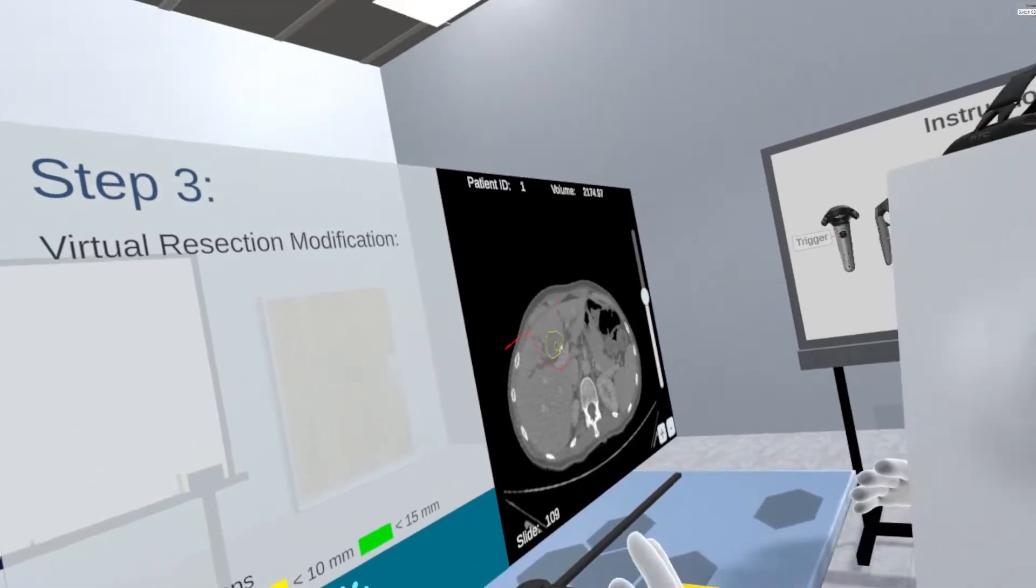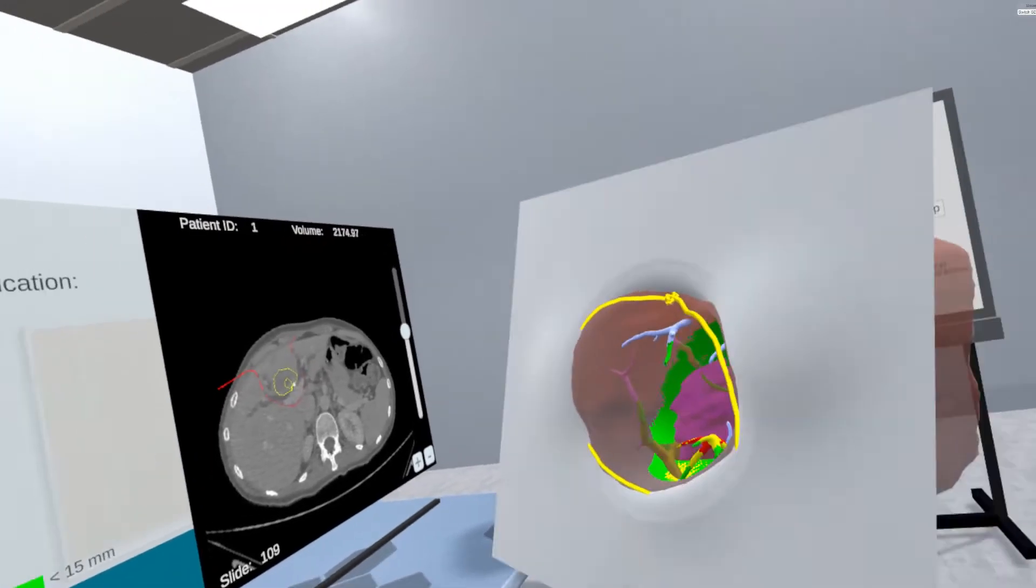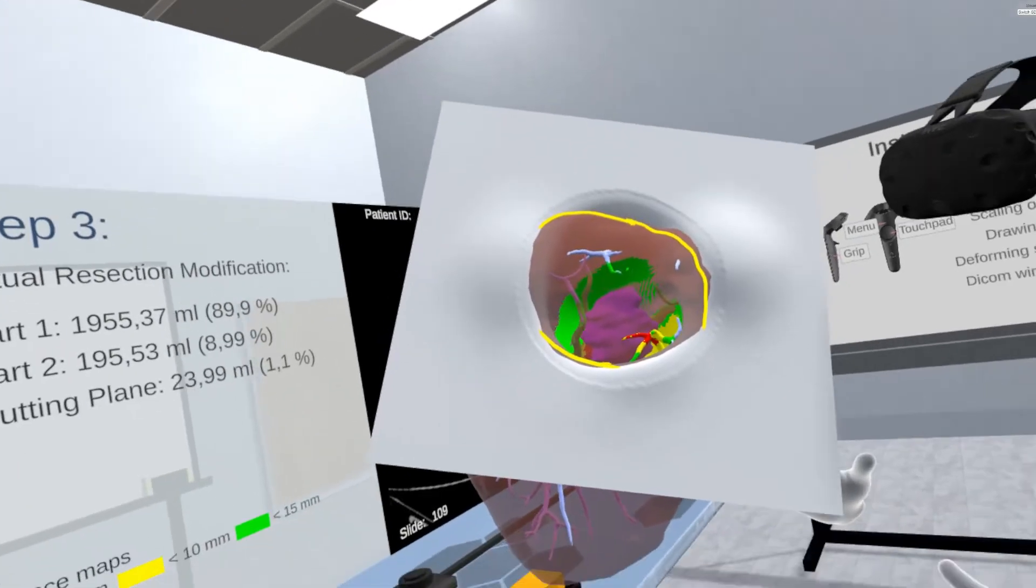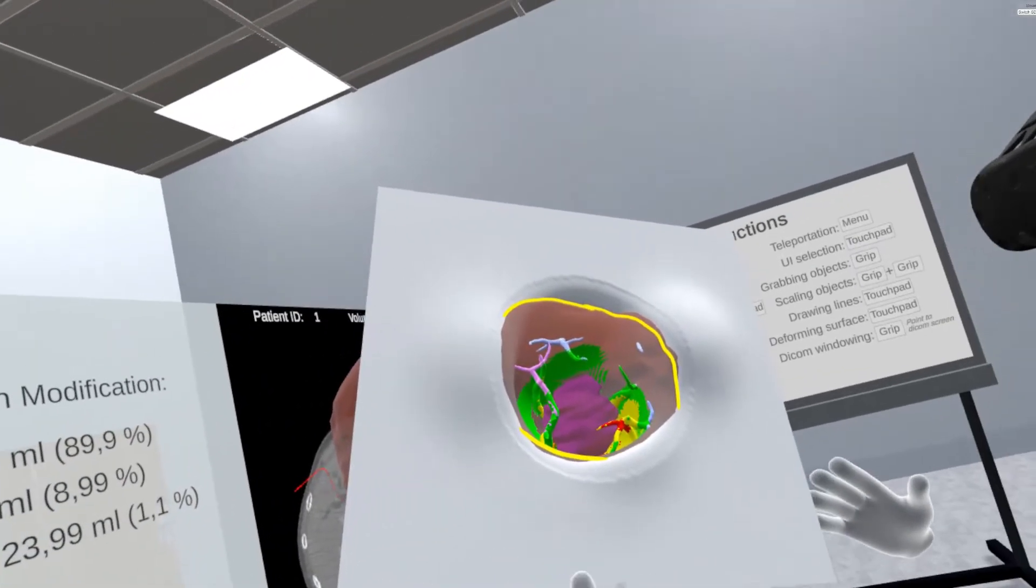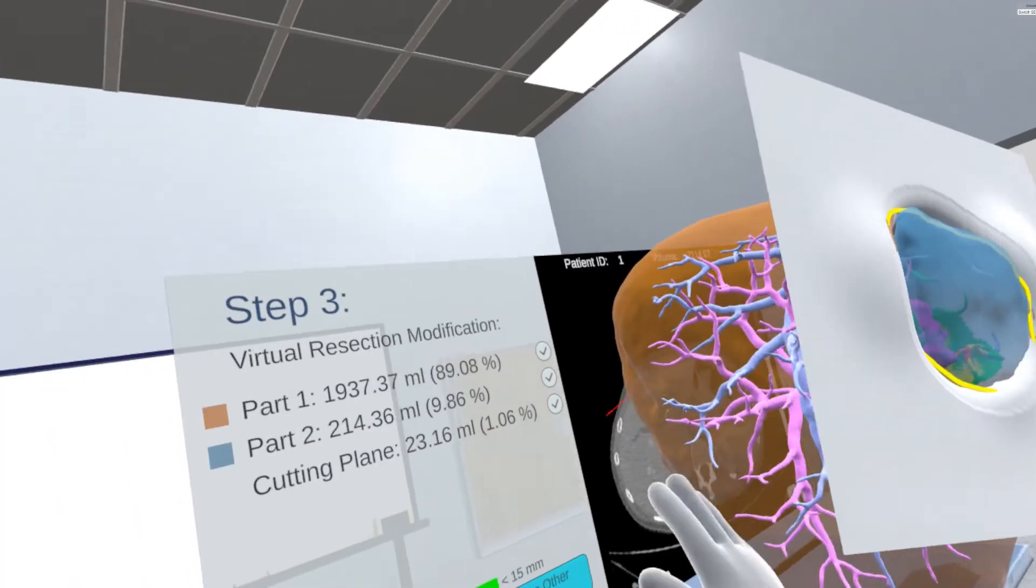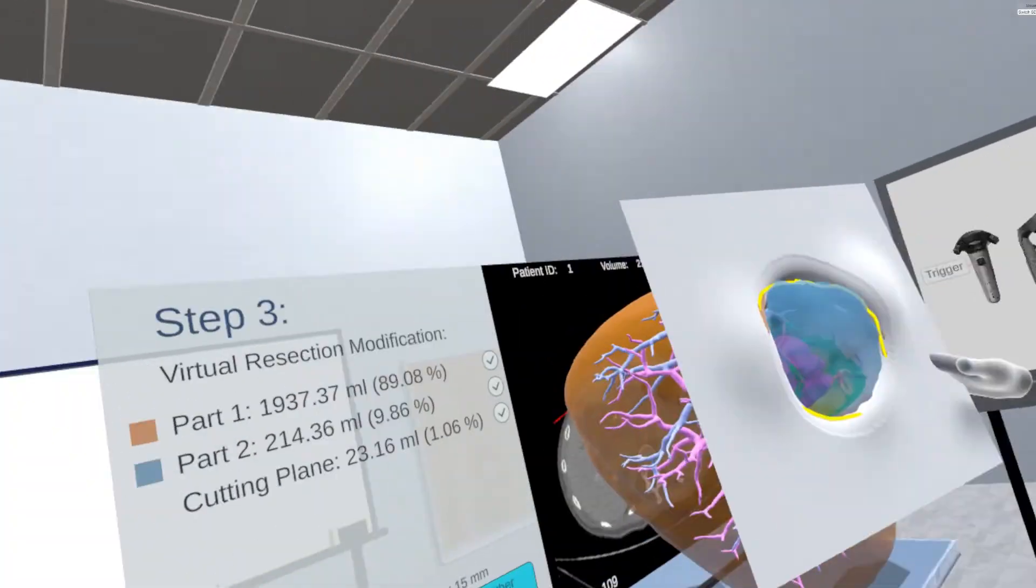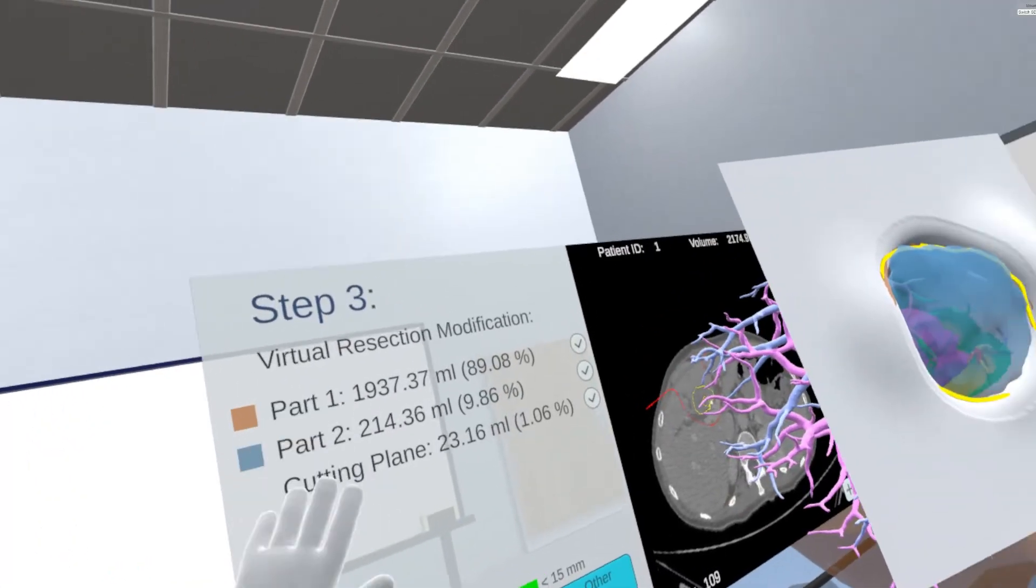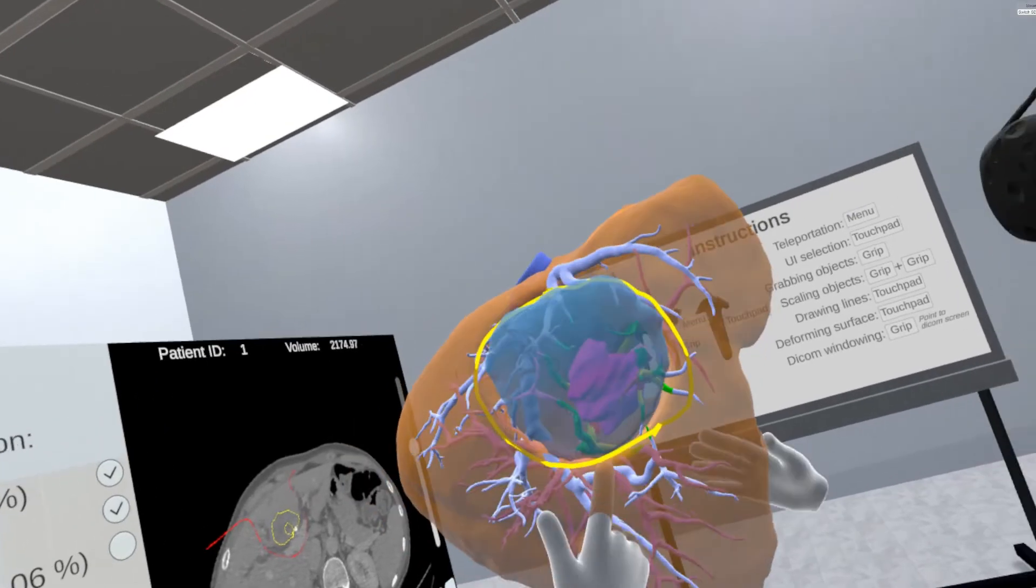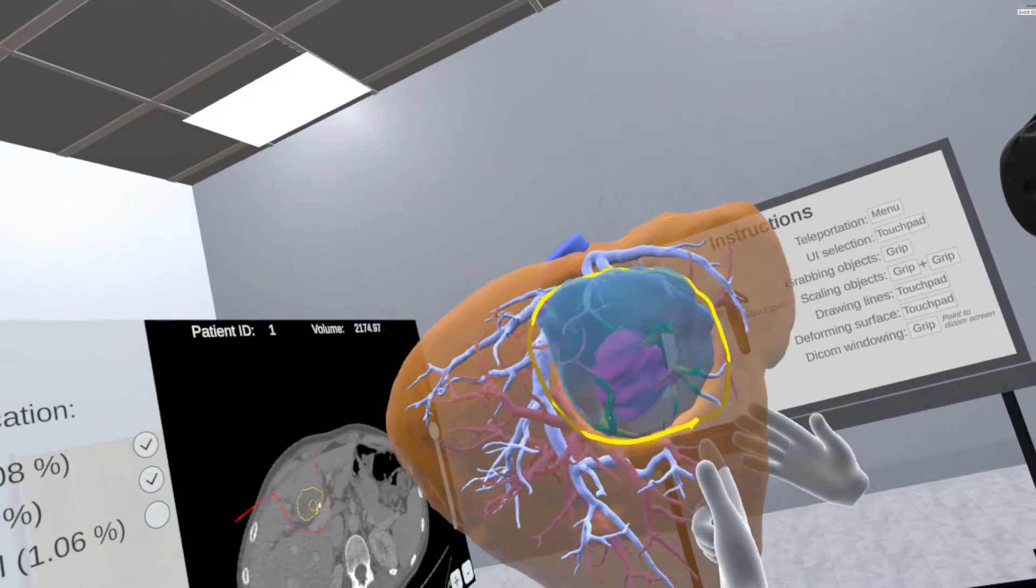After the users refine the resection surface, the planning procedure is achieved by a volume calculation of the resection and remaining parts of the organ. The planning results are visualized as resected volumes with their indicated amount and colors. The users can explore the individual resection parts and discuss the results. In cases of multiple tumors, they can add additional resection surfaces.